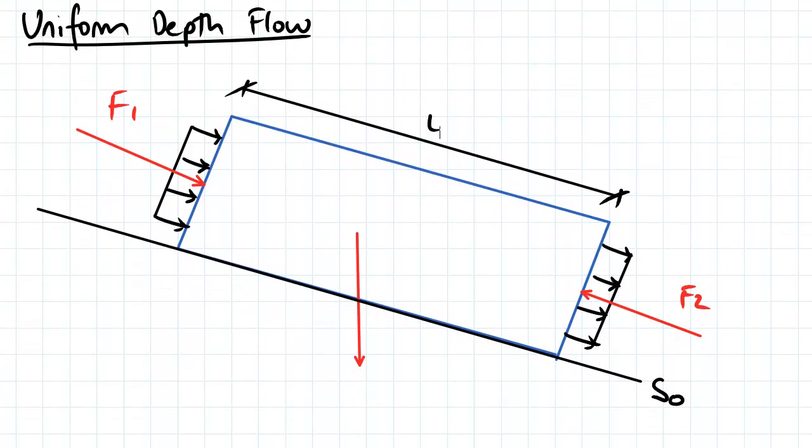To derive some equations for uniform depth flow, we're going to consider some region of flow, a control volume of length L, and we've got forces that are acting on both sides of this control volume, F1 and F2. That's due to the pressure of the water on each side.